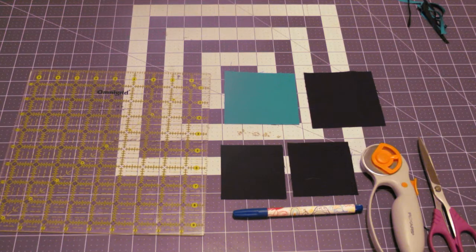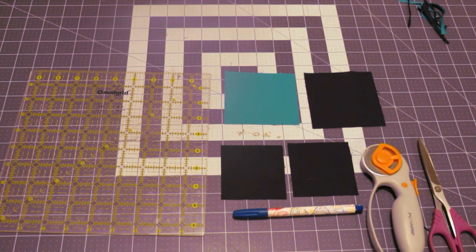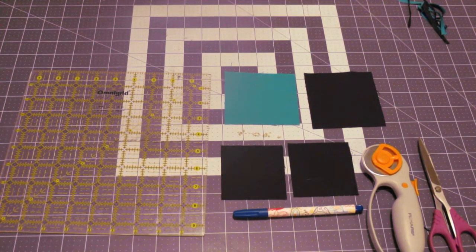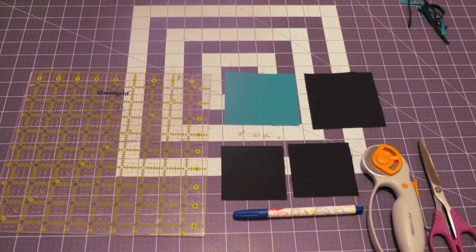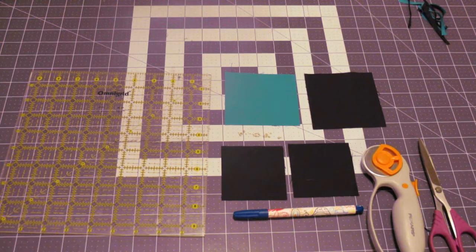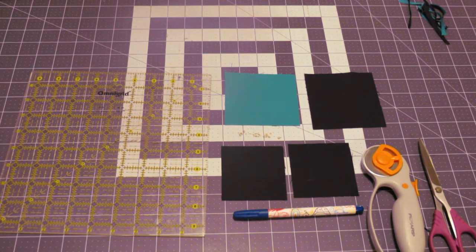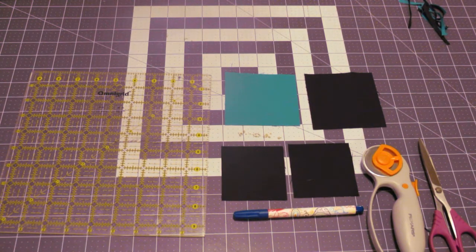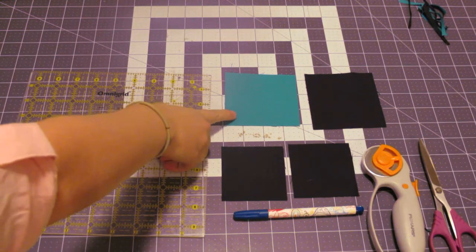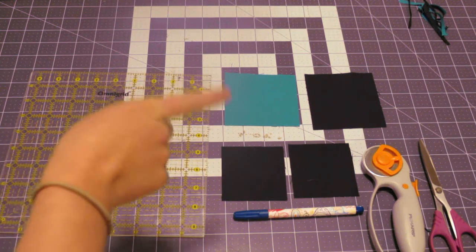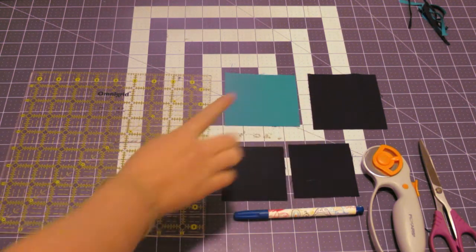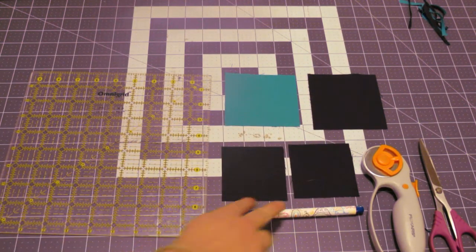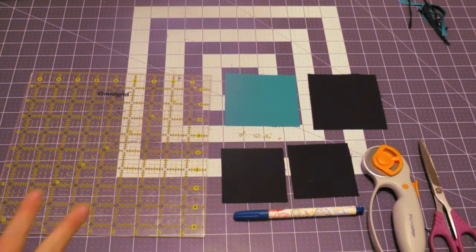These are some of the supplies that we are going to need to be able to make this block. You're going to need two fabrics. I'm using a turquoise and a darker blue. You're going to need one three and three quarters inch square of the blue, one three and three quarters inch of the dark navy blue, and two three inch squares of your dark color.